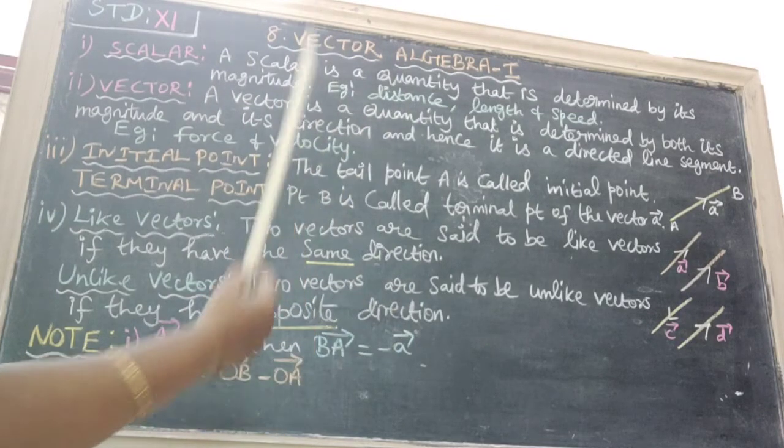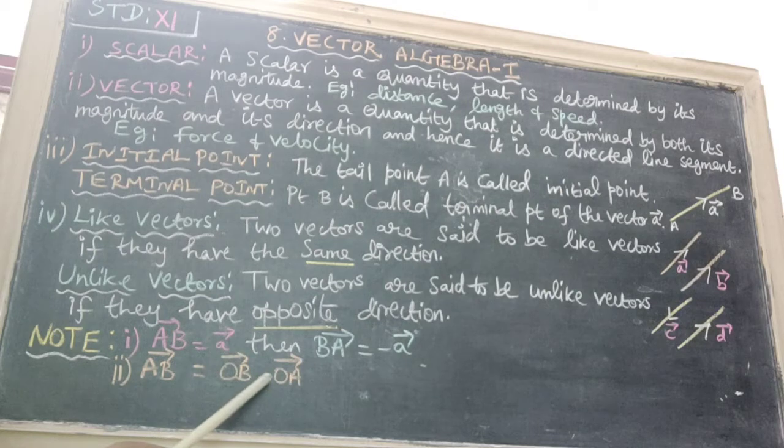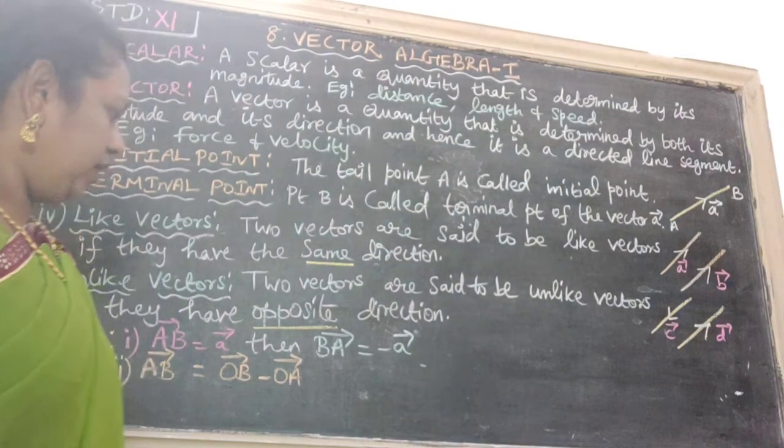Second one is AB vector. Here we use one formula: OB vector minus OA vector, where O vector is the position vector.